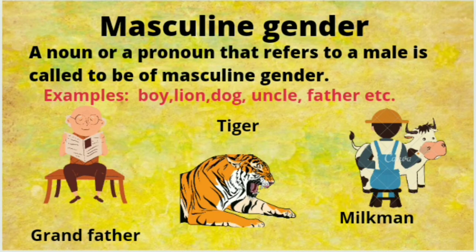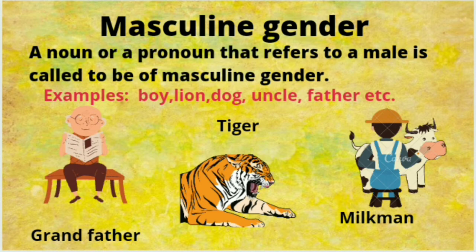Masculine gender — a noun or a pronoun that refers to a male is called to be of masculine gender. Or we can say a noun that denotes a male is said to be of masculine gender. Recall some examples: boy, lion, dog, uncle, father, brother. These all belong to masculine gender.